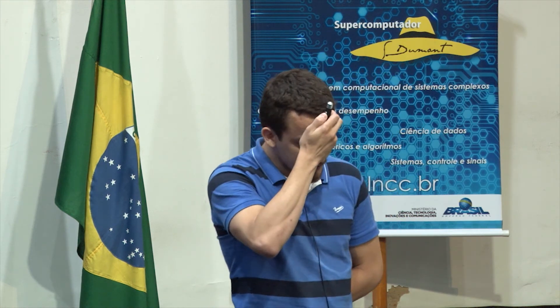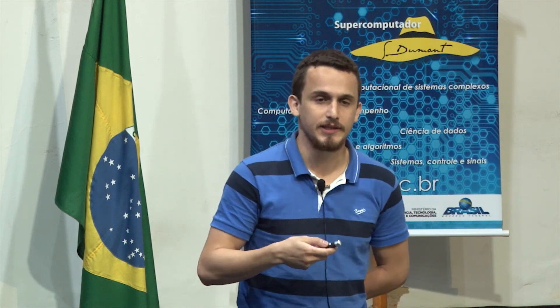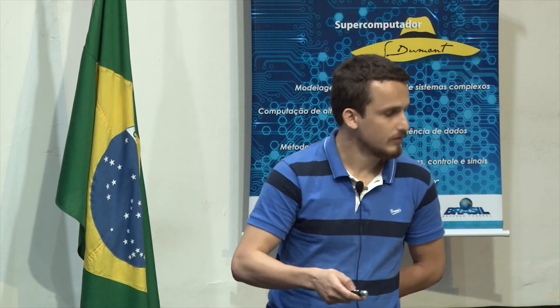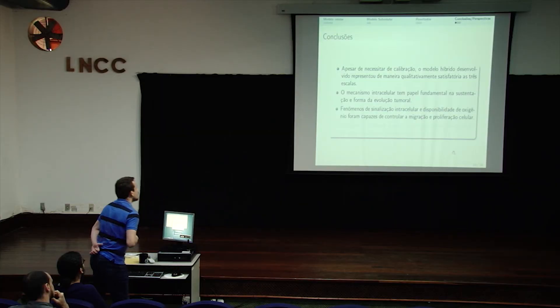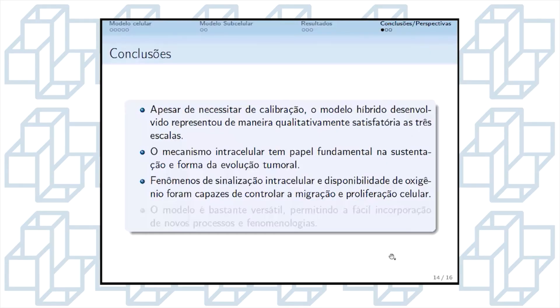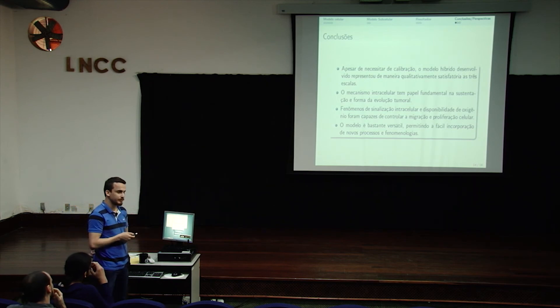Das conclusões que tiramos desse modelo: apesar de precisar de uma calibração, o modelo representa de maneira qualitativamente satisfatória as três escalas. O mecanismo intracelular tem um papel fundamental na sustentação e na forma da evolução tumoral. Os fenômenos de sinalização intracelular e a disponibilidade de oxigênio foram capazes de controlar tanto a migração como a proliferação celular. Esse modelo é bastante versátil, pois foi construído de forma bem modularizada, o que facilita a incorporação de novos processos e fenomenologias.